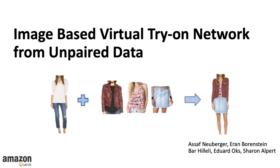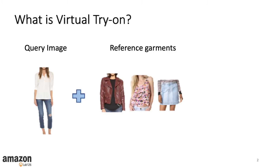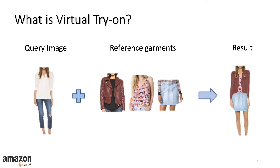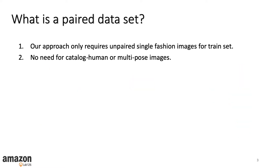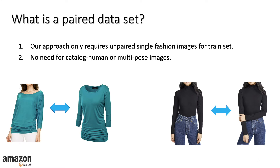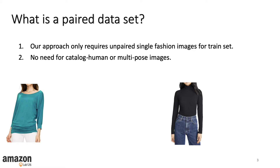We present virtual try-on from unpaired data. We can try out garments when we go to the store, but what if we could virtualize this experience? Our goal is to visualize the reference garments onto the query image. Most current methods require a paired dataset where each garment is captured multiple times with and without a human model wearing it, or for multiple poses. Our method learns from a collection of unpaired fashion images.